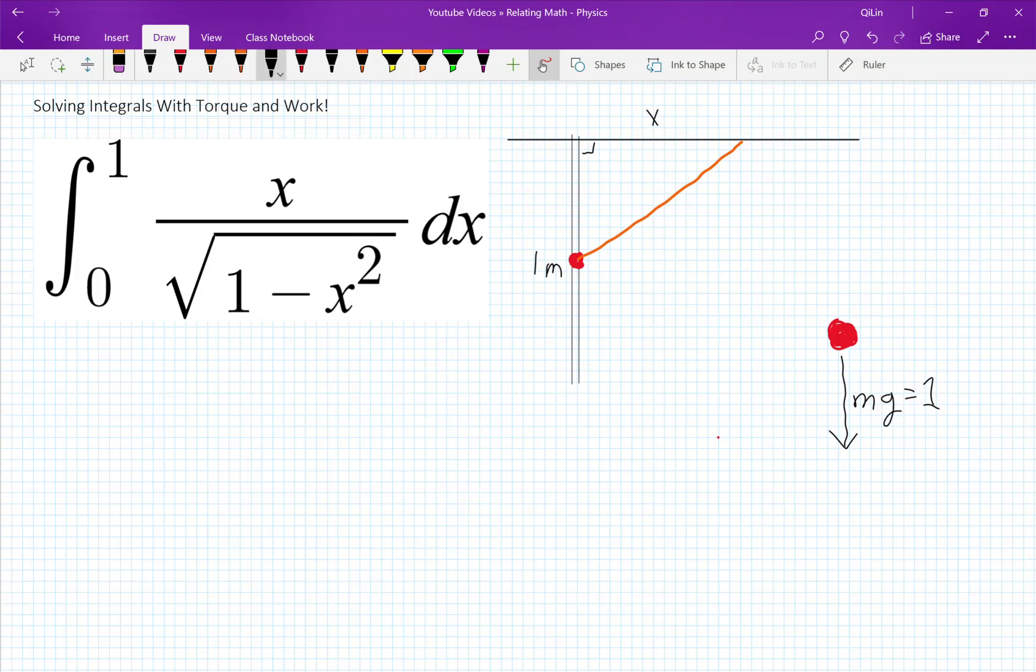The string is still 1 meter long and we can solve for the distance between the ceiling and the ball by using Pythagorean theorem which is just square root of 1 minus x squared. So that's great. Now we can start solving for the work.